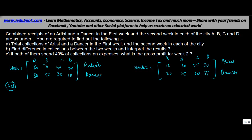This seems to be a complicated problem, but as you solve it you'll find that it's pretty easy and simple. Combined receipts of an artist and a dancer in the first week and the second week in each of the cities A, B, C and D are given. This is a practical application of matrices — you are given certain data and required to find specific answers.